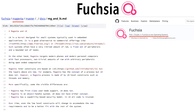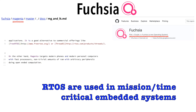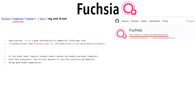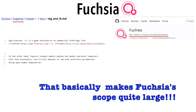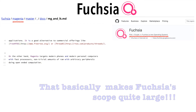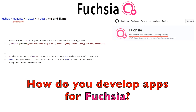If you start searching a bit more about Magenta, it becomes clear from the documentation that it is a real-time operating system. The documentation says that it targets modern phones and modern personal computers with fast processors, non-trivial amounts of RAM, with arbitrary peripherals doing open-ended computation.